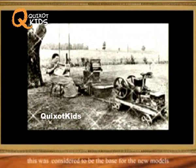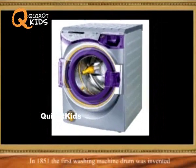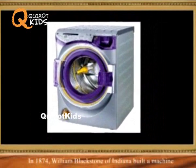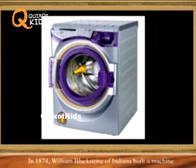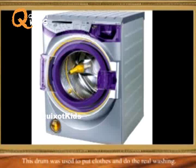In 1851, the first washing machine drum was invented. In 1874, William Blackstone of Indiana built a machine which was smaller in size so that it could be used in the home. This drum was used to put clothes in and do the real washing.